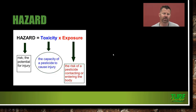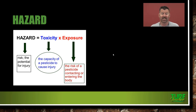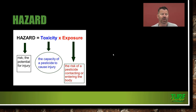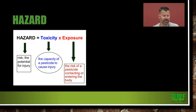Hazard is equivalent to toxicity times exposure. Hazard is the risk — it is the potential for injury. Nothing's happened yet; it's just the potential. Hazard is equivalent to the toxicity of the product — the capacity of the pesticide to cause injury — times the exposure, which is the risk of a pesticide contacting or entering the body. This isn't a math problem; it's just a definition of what hazard means.